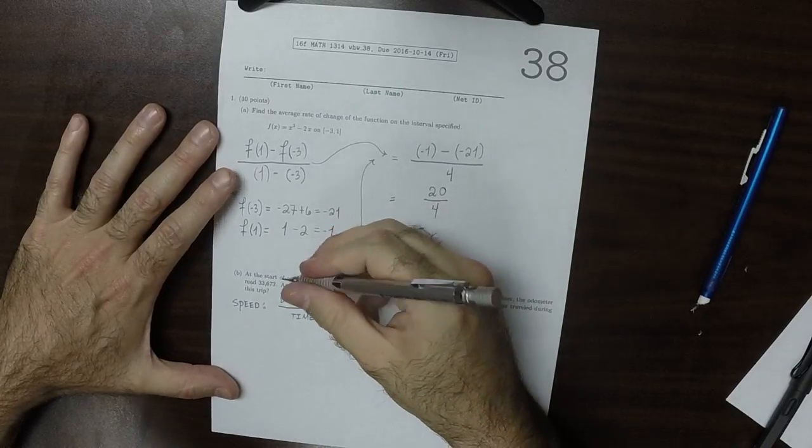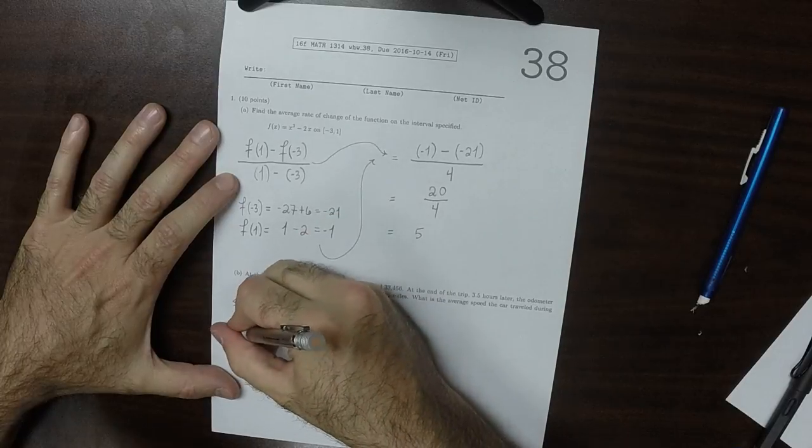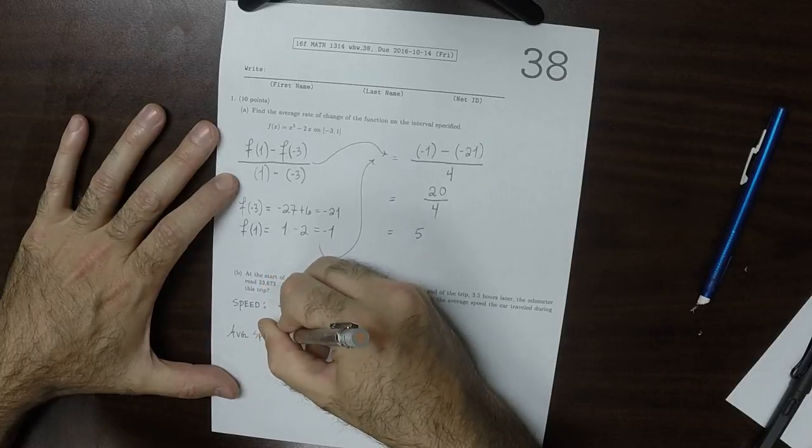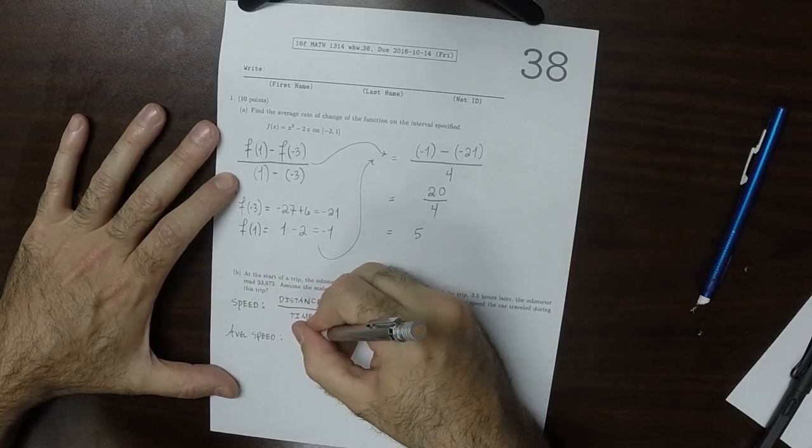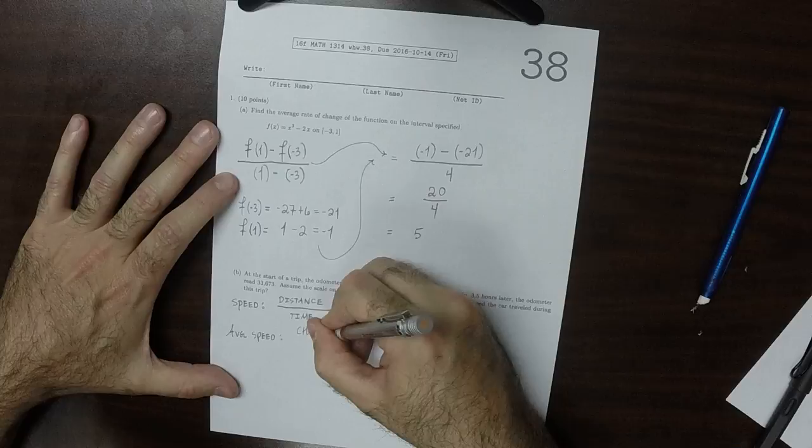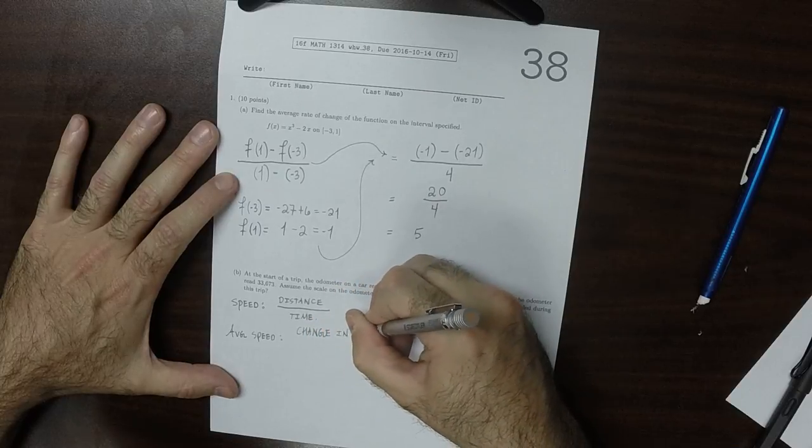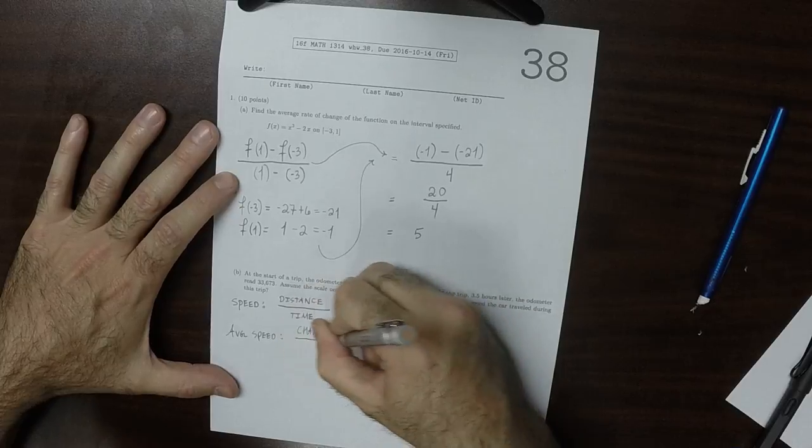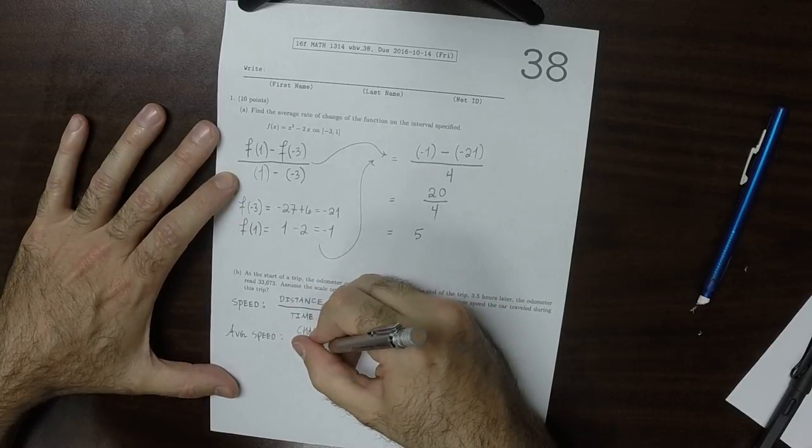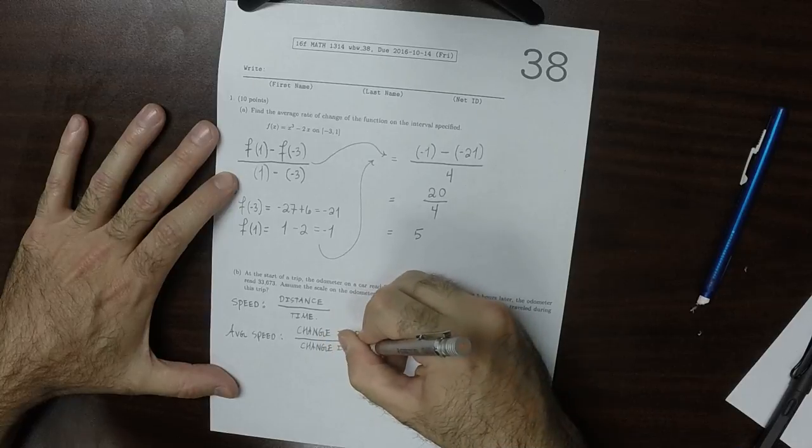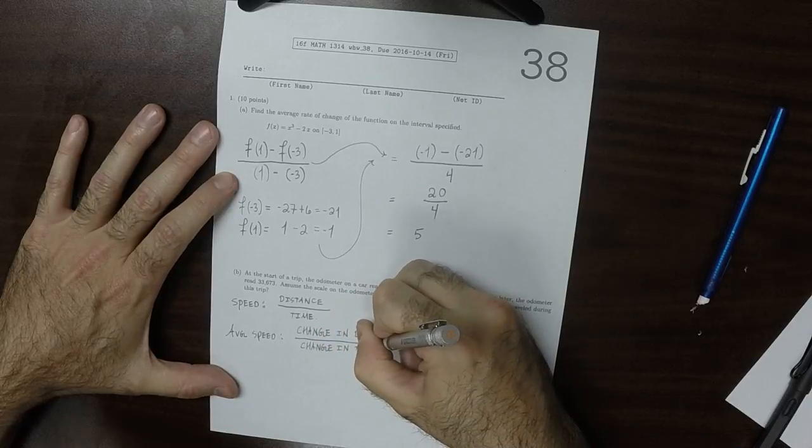So then the average speed. This will be the change in distance over the change in time.